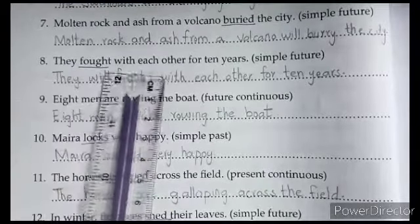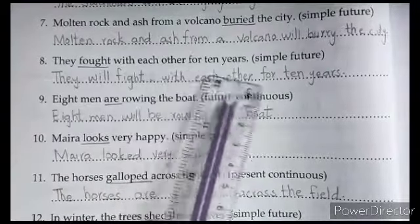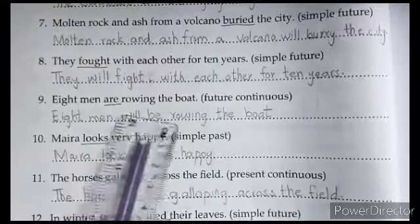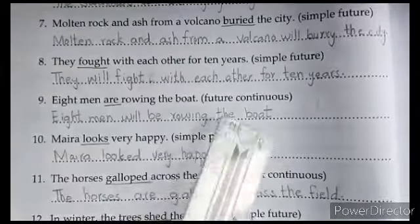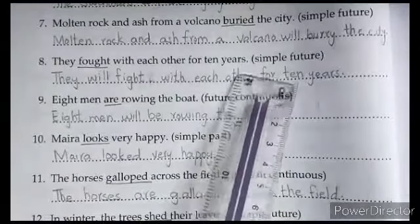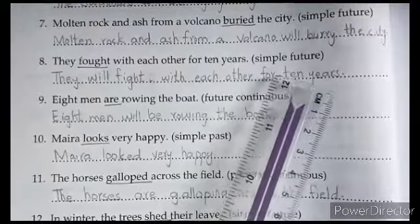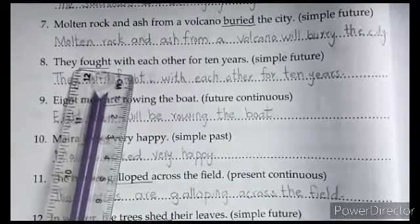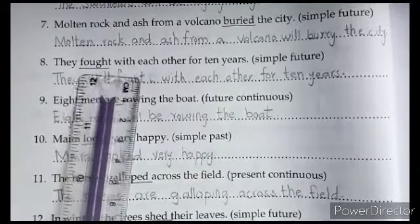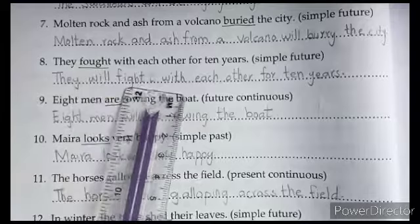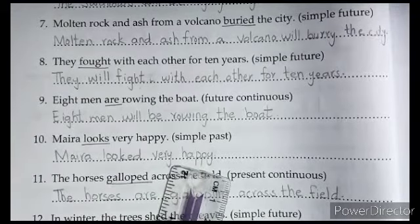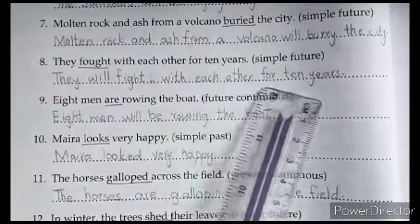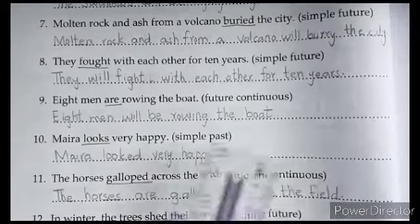Next: 'They fought with each other for 10 years' — change to simple future. Just like the sentence above, we add 'will' and use the first form of 'fought', which is 'fight': 'They will fight with each other for 10 years.'